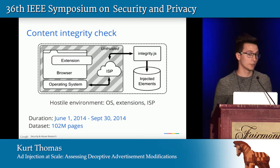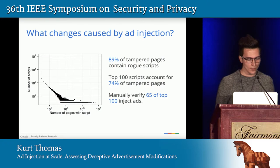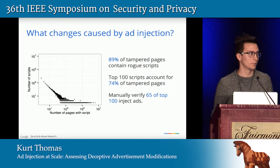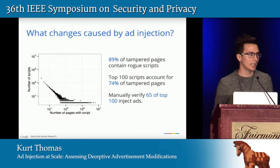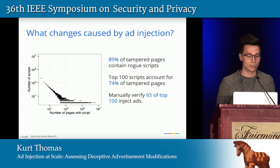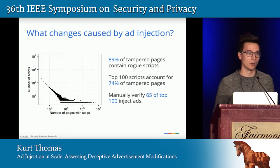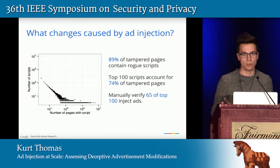We collected about 102 million samples throughout this period of pages that could potentially have ad injection. Just because you have new content in the Google DOM doesn't necessarily mean it's advertisement content — there could be legitimate extensions modifying the browser to the user's benefit. A key insight is that 89% of tampered pages included some form of rogue JavaScript. There were about 19,000 distinct scripts following a Zipf-like distribution, where the top 100 scripts account for 74% of all tampered pages.